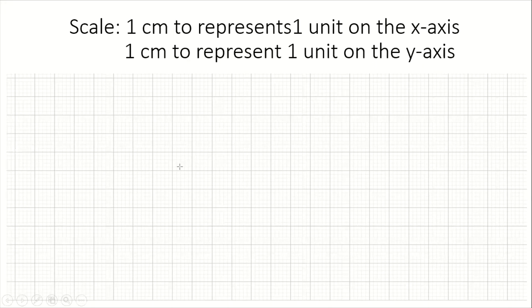Hello everyone, welcome to another video. In this video we're going to look at how we draw our Cartesian coordinate system using a specific scale. The first scale we have is one centimeter to represent one unit on the x-axis, and one centimeter to represent one unit on the y-axis.